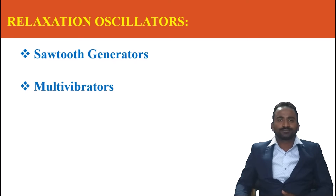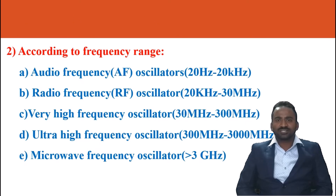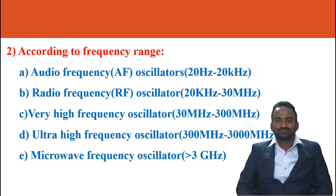According to the frequency range, an oscillator is classified into five types: one is audio frequency oscillator whose frequency ranges from 20 Hz to 20 kHz; the second is high frequency oscillator ranging from 20 kHz to 30 MHz; the third is very high frequency oscillator ranging from 30 MHz to 300 MHz; the fourth is ultra high frequency oscillator; and the fifth is microwave oscillator whose frequency range is greater than 3 GHz.